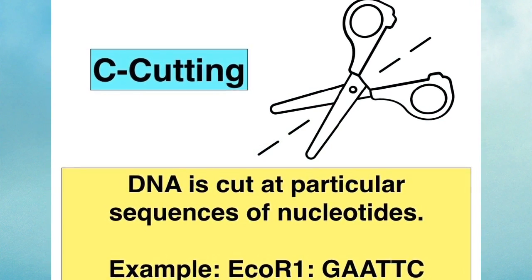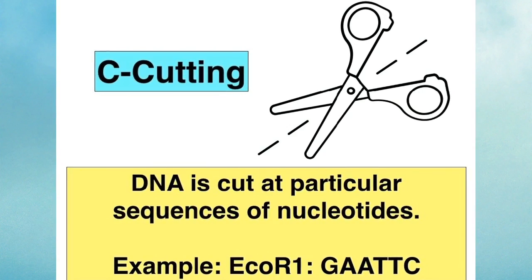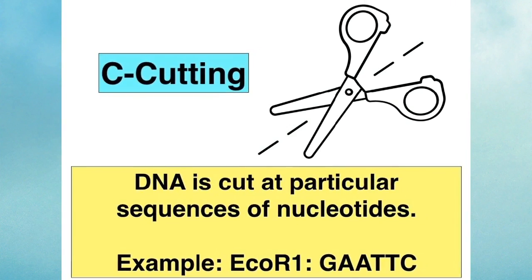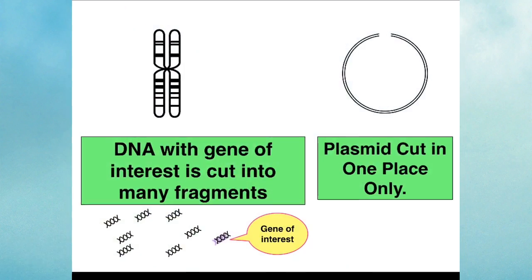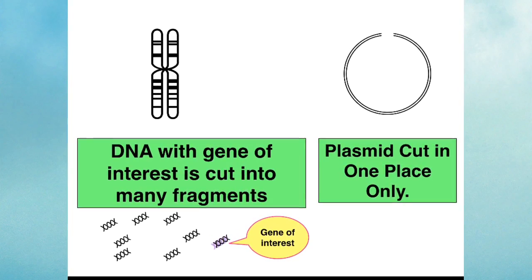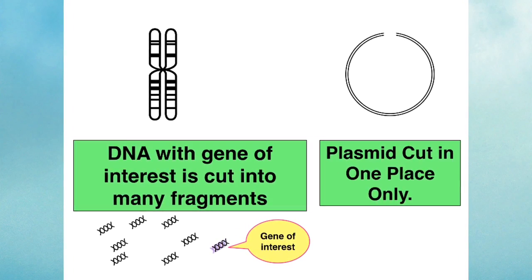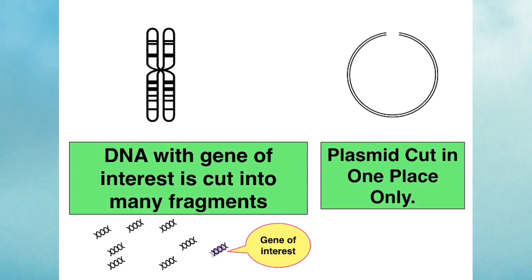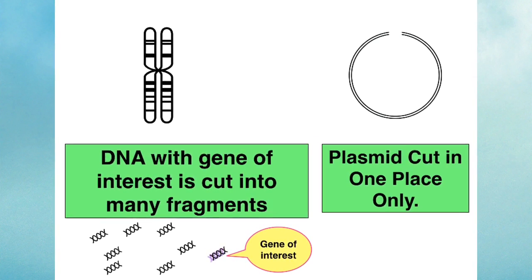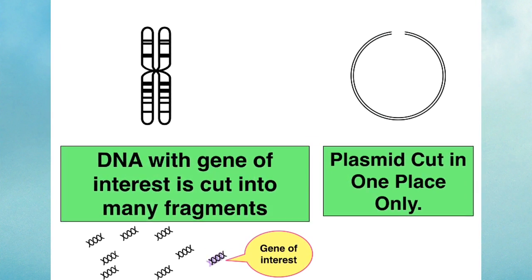ECO-R1, one of the most commonly used restriction enzymes, recognizes the sequence GAA-TTC. The use of restriction enzymes during the cutting procedure will chop the DNA with the gene of interest into many fragments, and the bacterial plasmid will only be cut in one place.